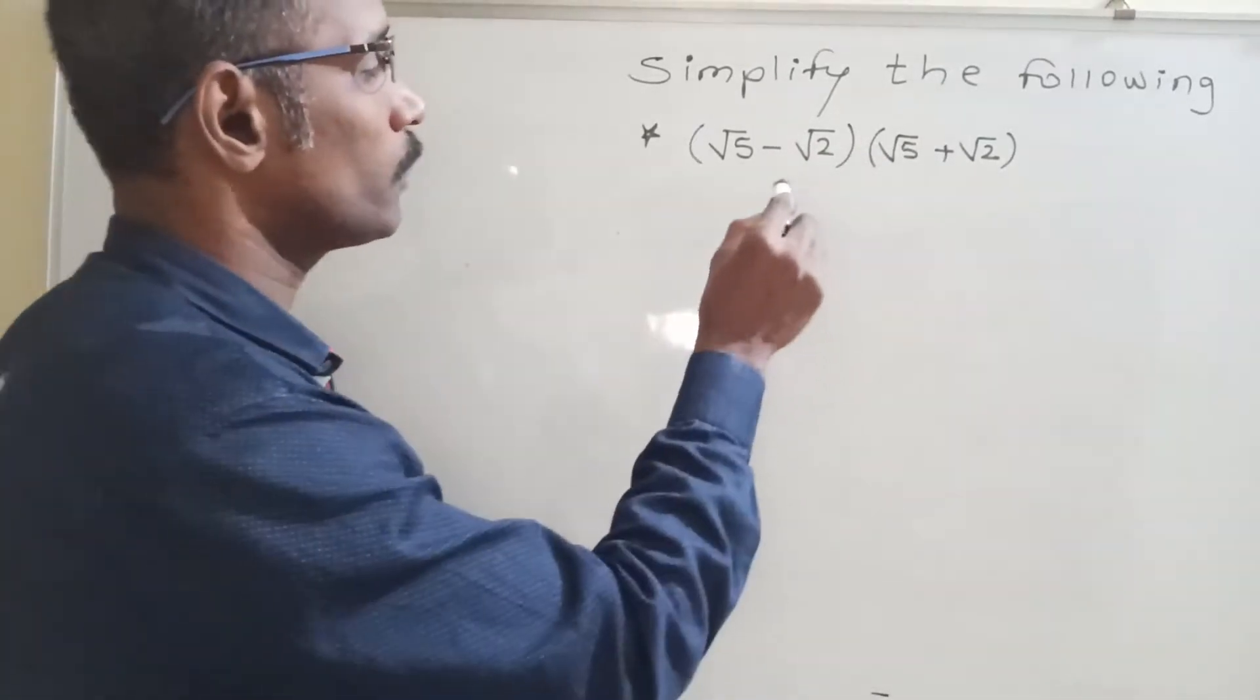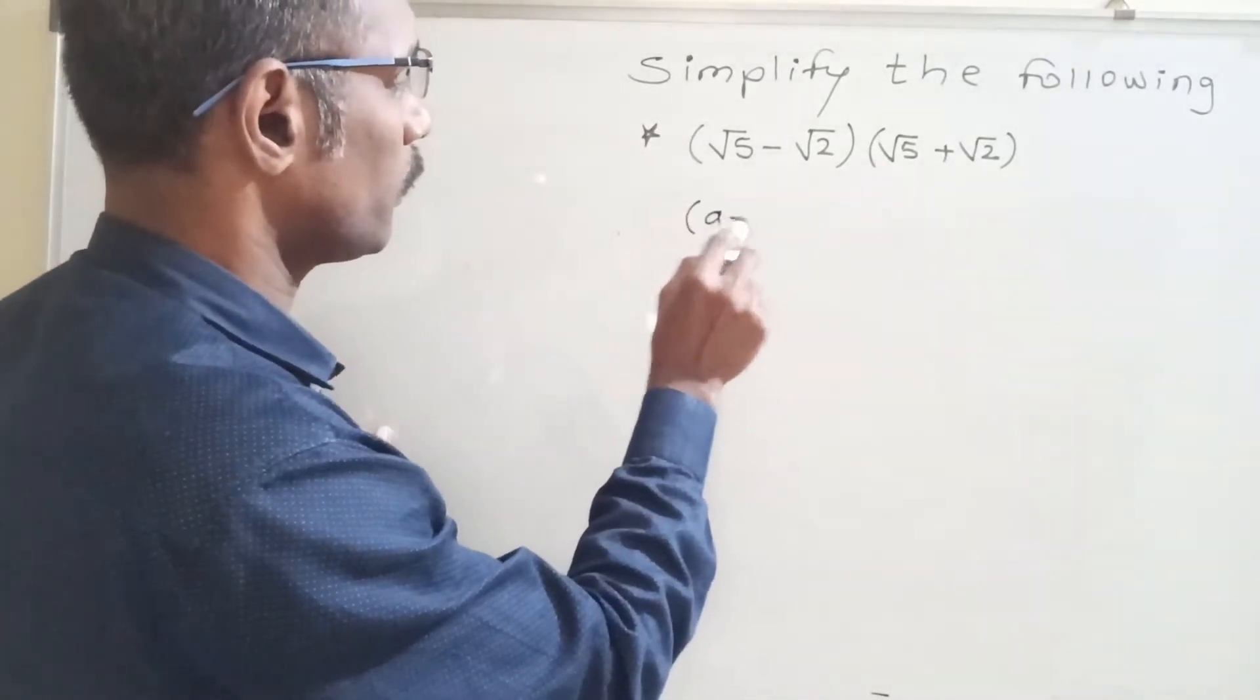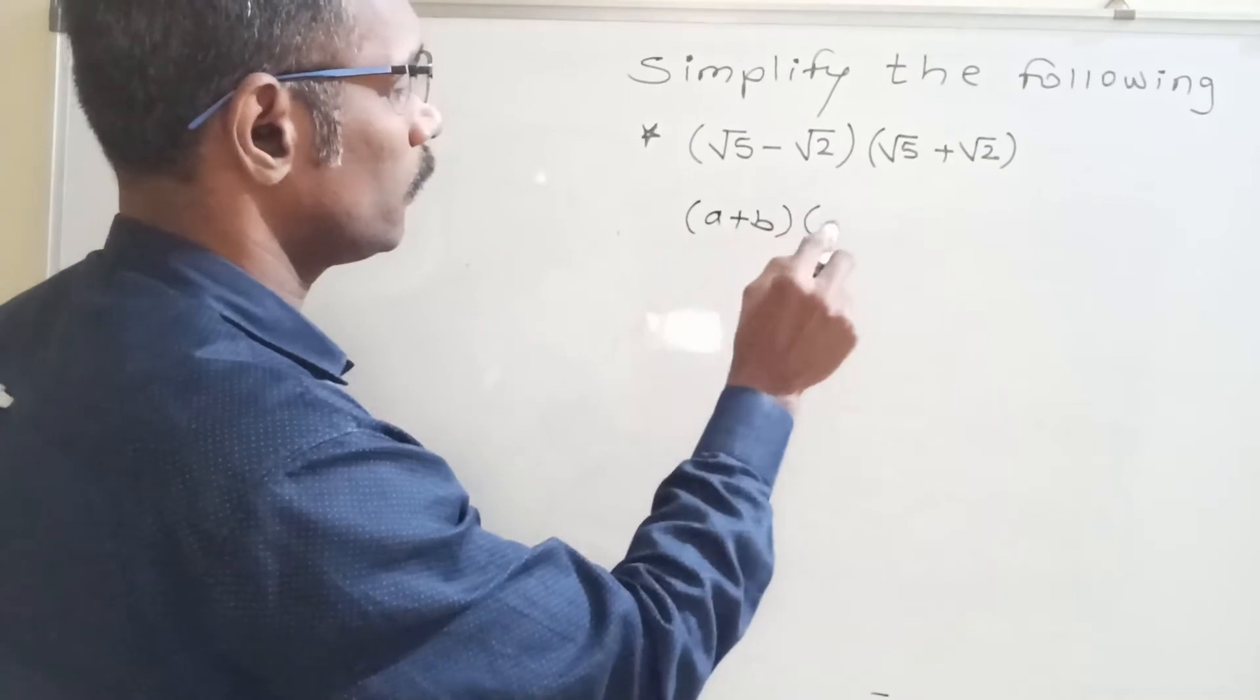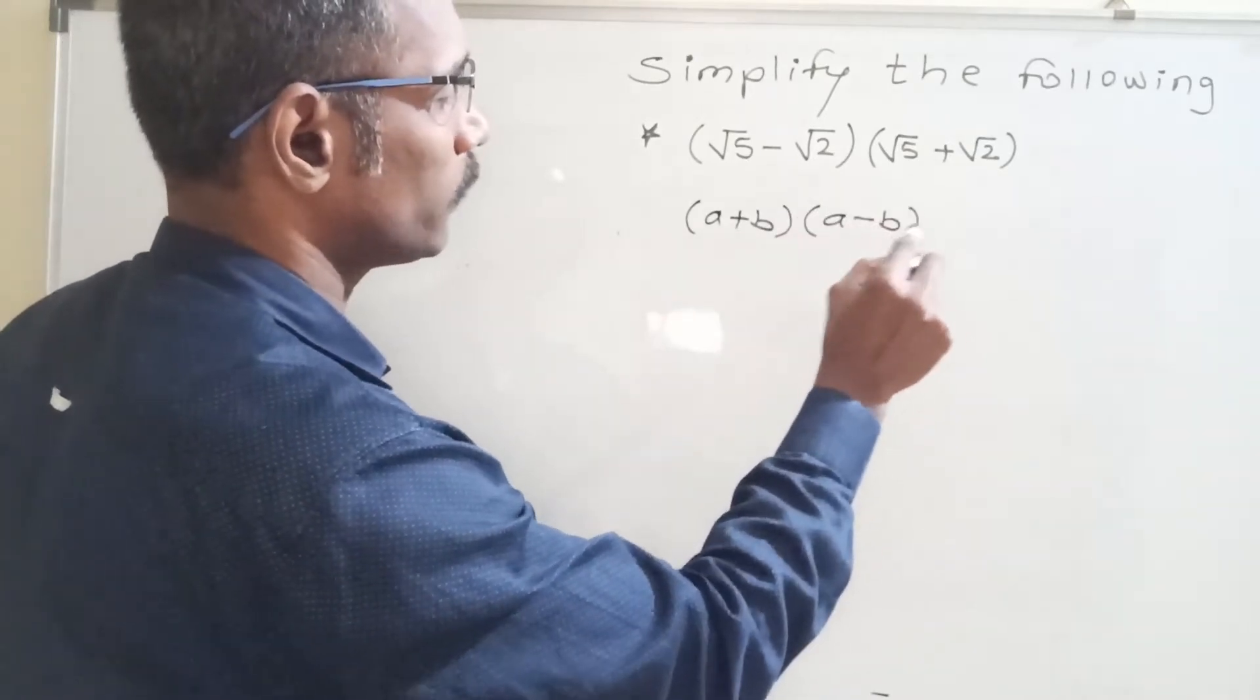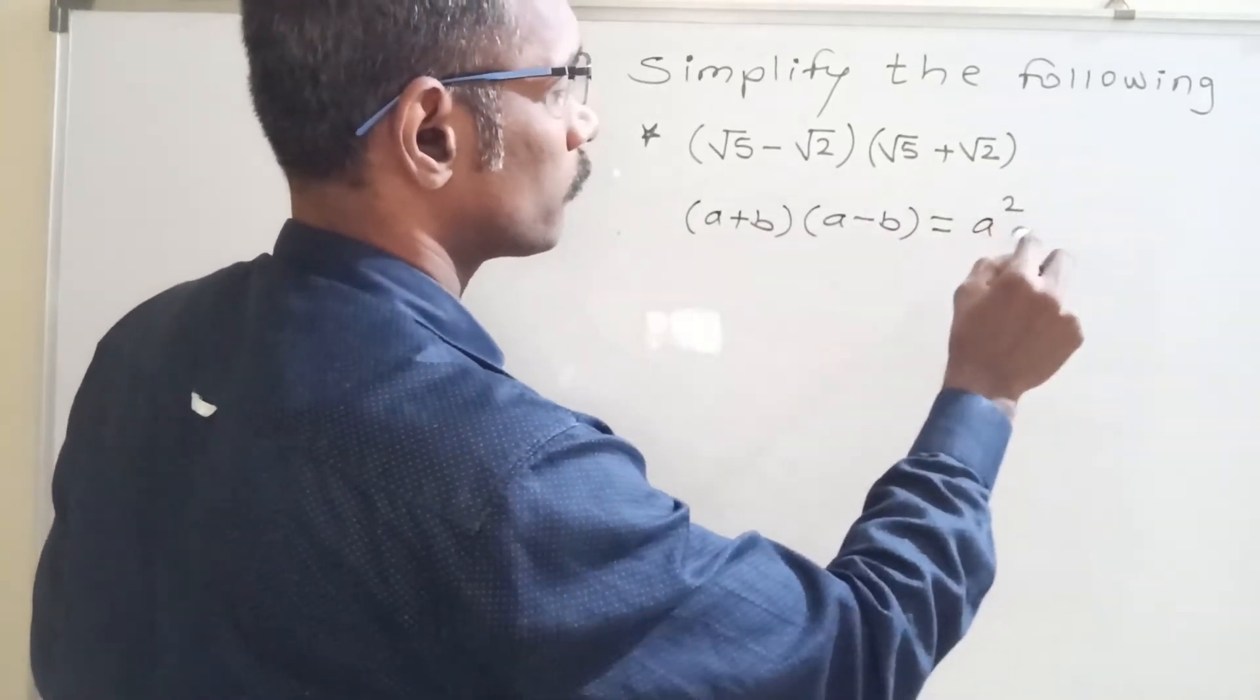Now we apply here the formula of identity that is a plus b into a minus b means a squared minus b squared.